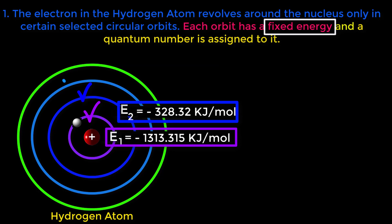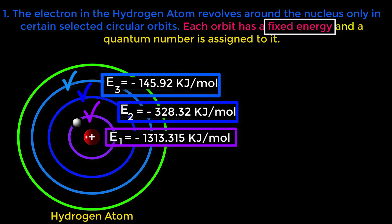The energy of this third orbit is called E₃. E₃ equals minus 145.92 kJ per mole. This energy is also fixed. Similarly, fourth orbit, fifth orbit, all orbits are associated with fixed energy.